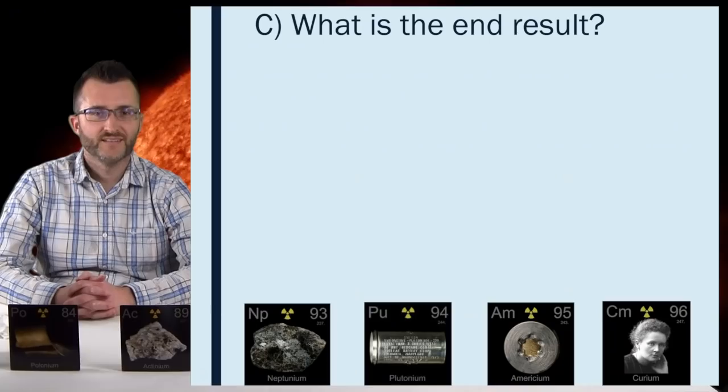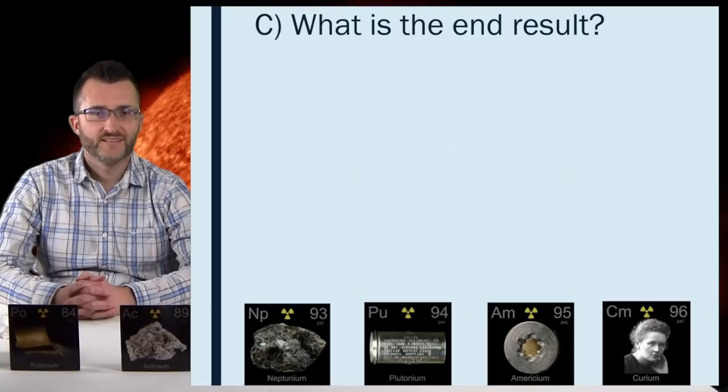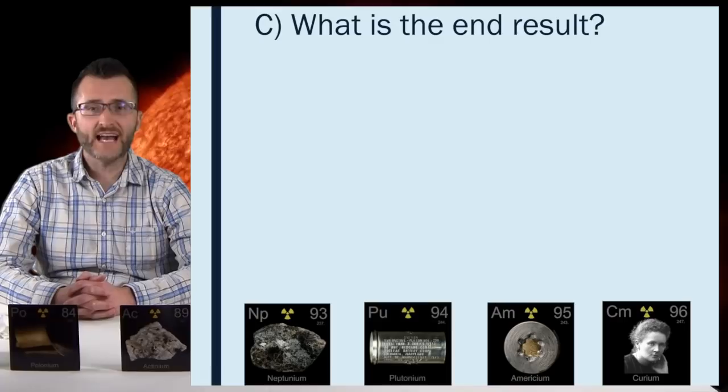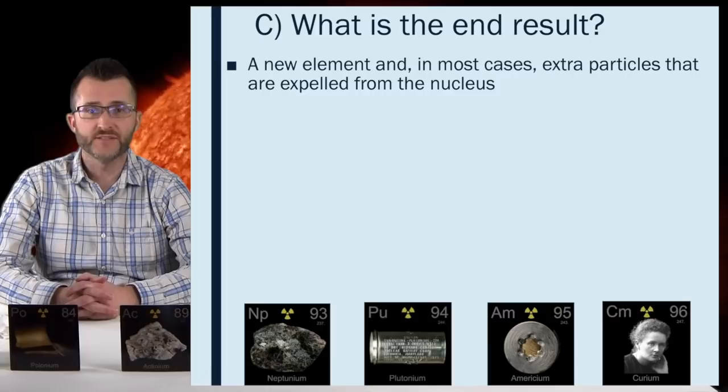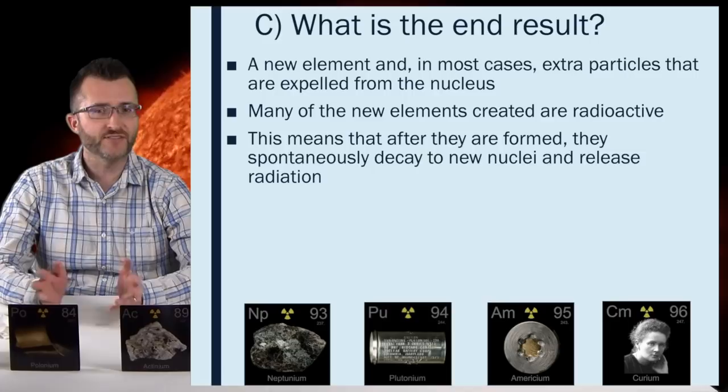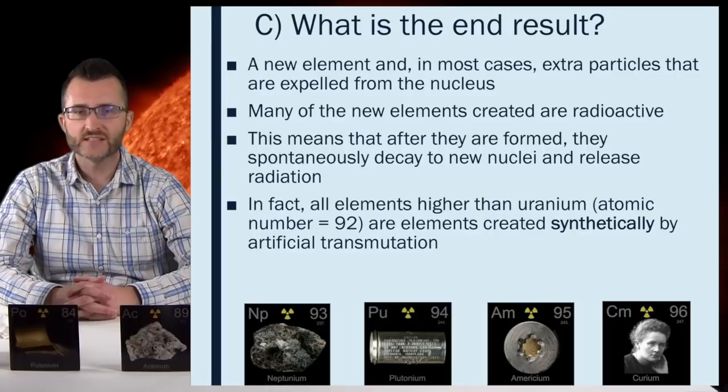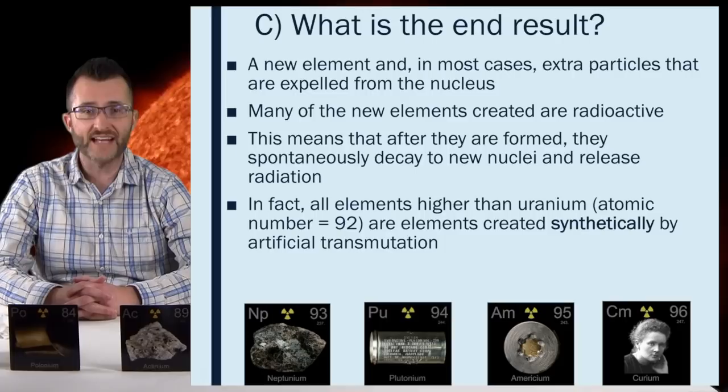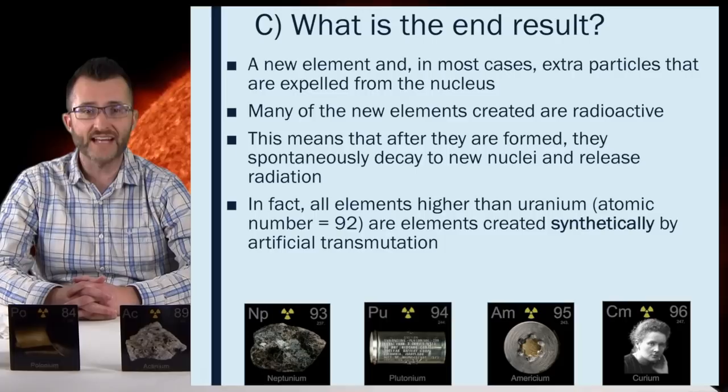What is the end result? A new element and in most cases, extra particles that are expelled from the nucleus. Many of the new elements created are radioactive. This means that after they are formed, they spontaneously decay to new nuclei and release radiation. In fact, all elements higher than uranium, atomic number 92, are elements created synthetically by artificial transmutation. These trans-uranium elements are all radioactive and do not last very long before they decay.